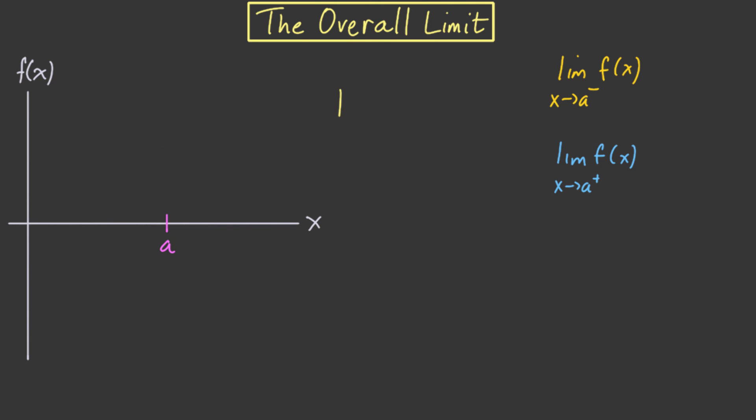We'll denote it by limit of f(x) as x approaches a, so notice that there's no plus or minus sign here, and this will equal L if whenever x comes in close to a from either side, f(x) gets really close to L. In other words, the overall limit equals L exactly when the left hand limit and the right hand limit are both equal to this same number L.